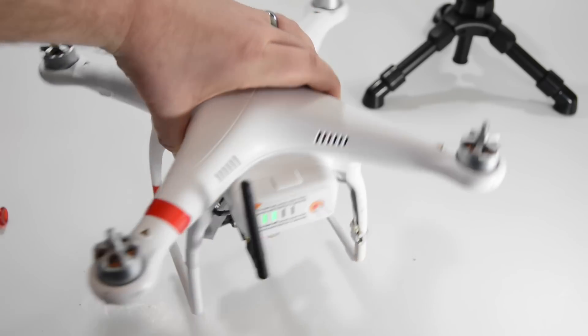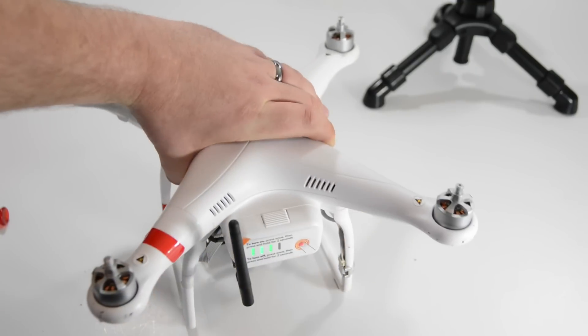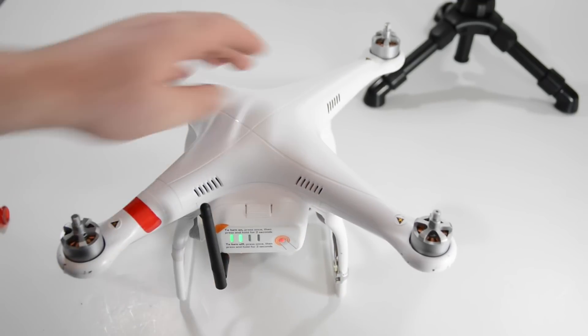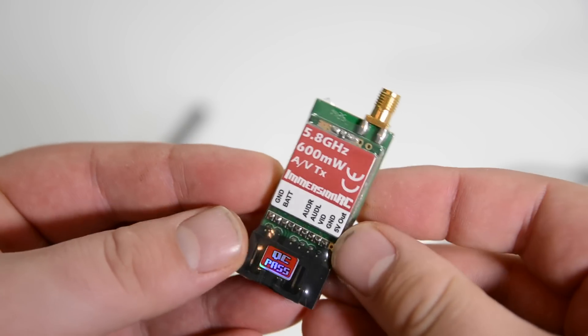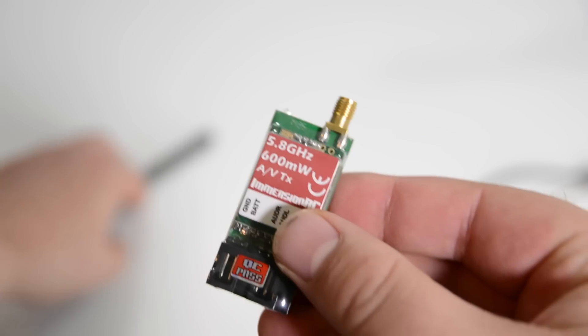Hey what's up guys, in this tutorial I'm going to show you how to install your iosd mini and your 5.8 gigahertz 600 milliwatt AV transmitter onto your DJI Phantom 2.